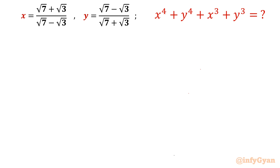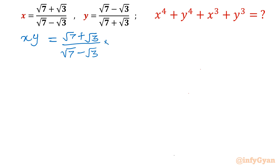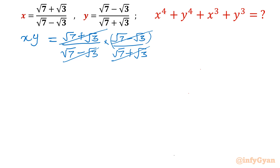If you observe, x and y are mutually reciprocal. So let me take the product of both. xy = (√7 + √3)/(√7 − √3) × (√7 − √3)/(√7 + √3). You can see these terms cancel out, so our conclusion is xy = 1. This is our first equation.